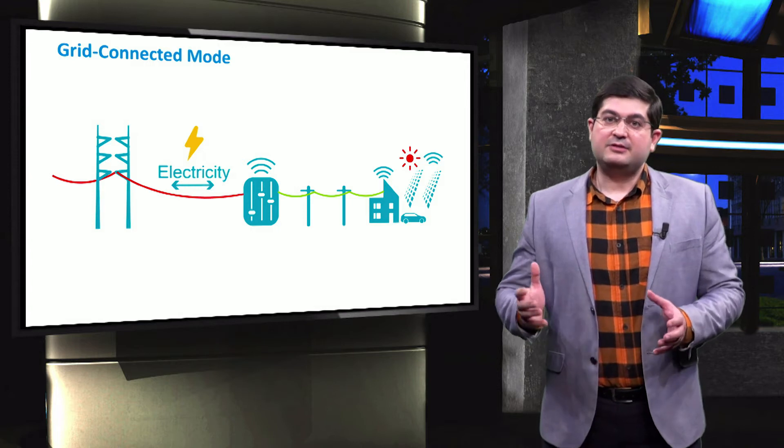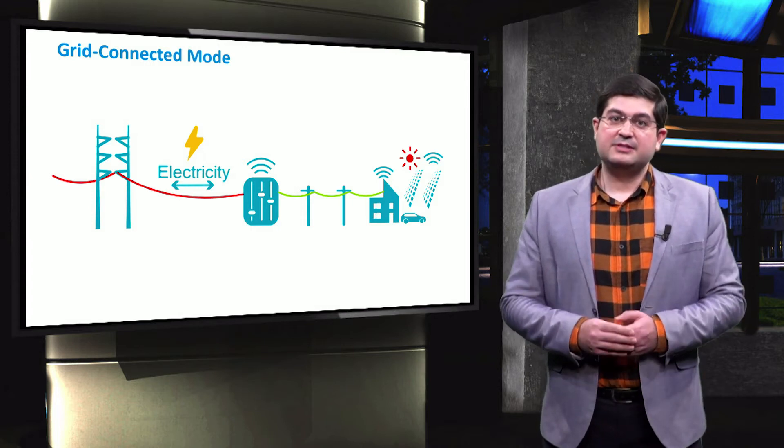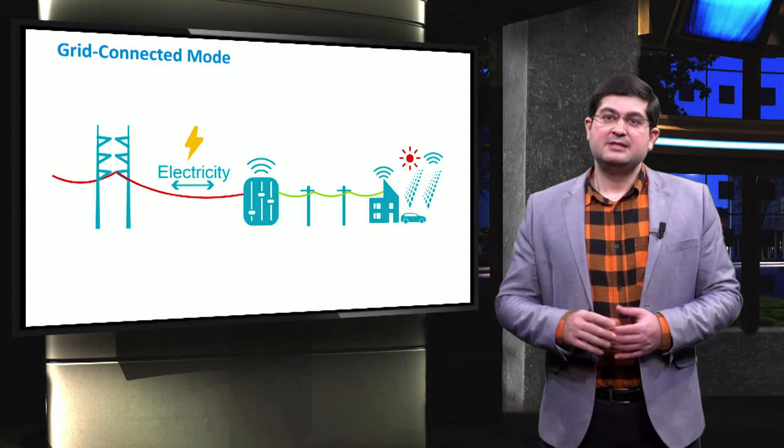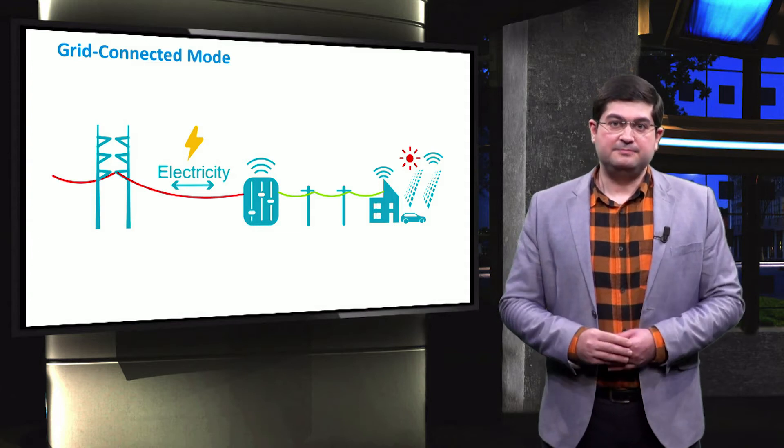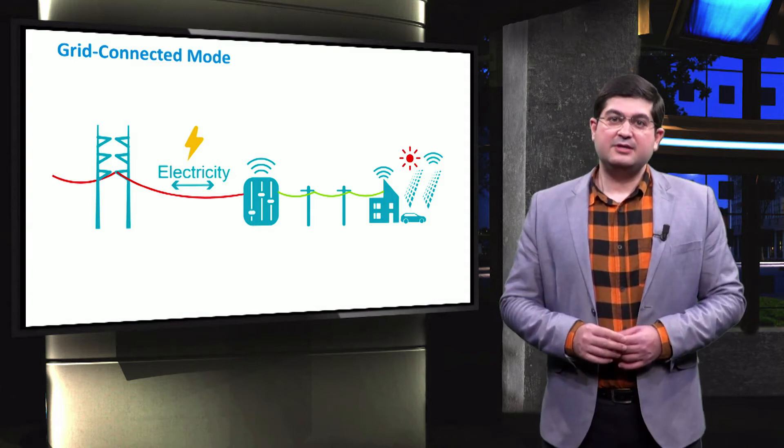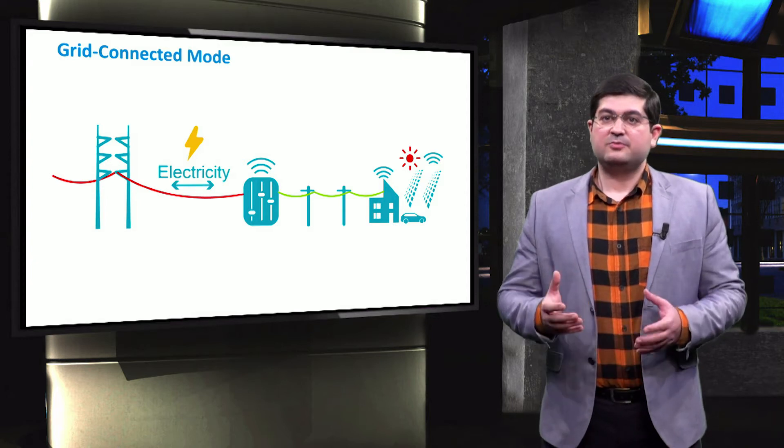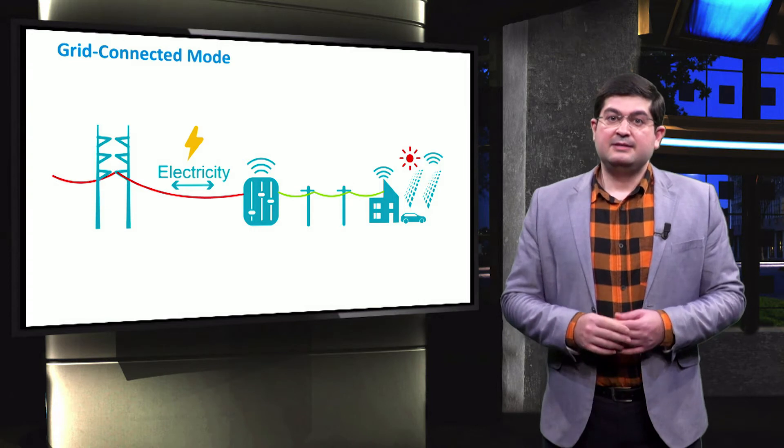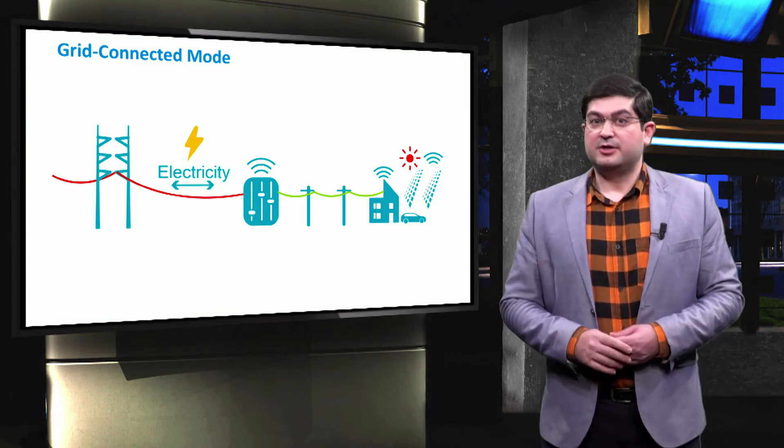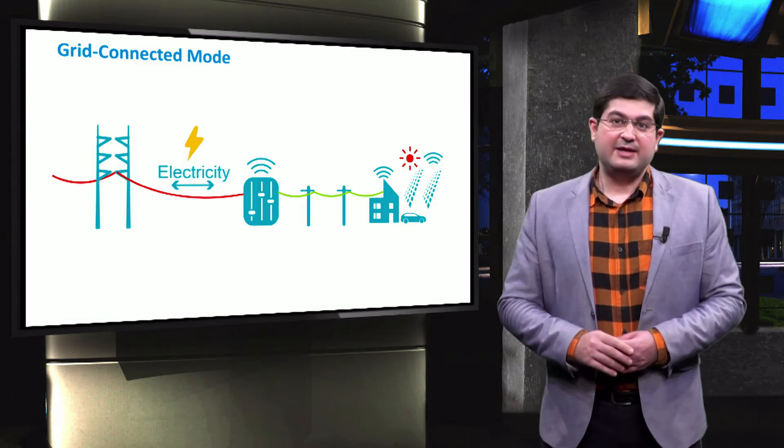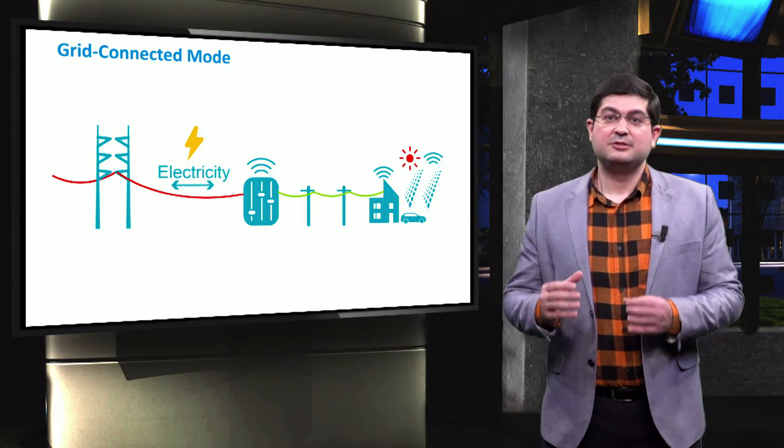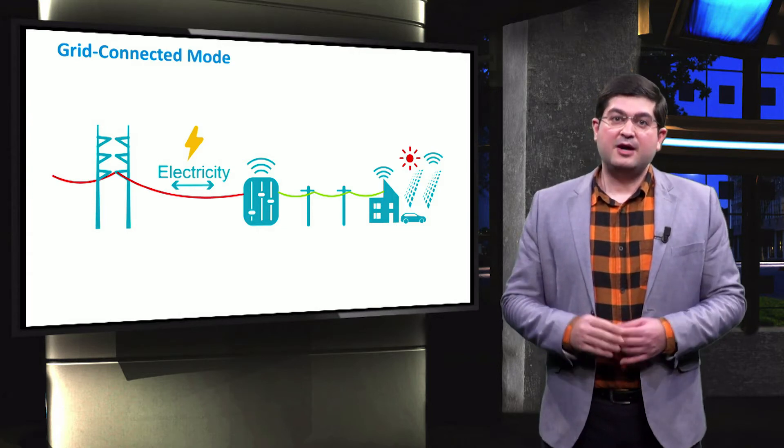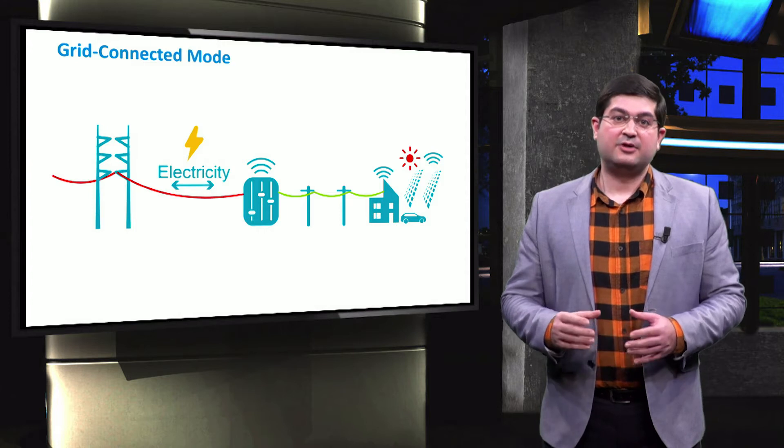We call a grid weak when both voltage and frequency are not properly set and controlled by the grid. Note that if the grid would be weak in such a way that it severely affects the operation of a microgrid, such as for a rural remote village, then to avoid damage to equipment, the microgrid might be disconnected from the weak grid.